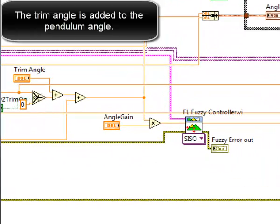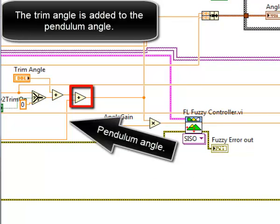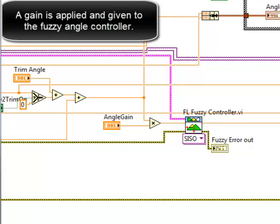Applied to the fuzzy output signal is a gain that is appropriate for the trim angle. The trim angle is added to the pendulum angle.